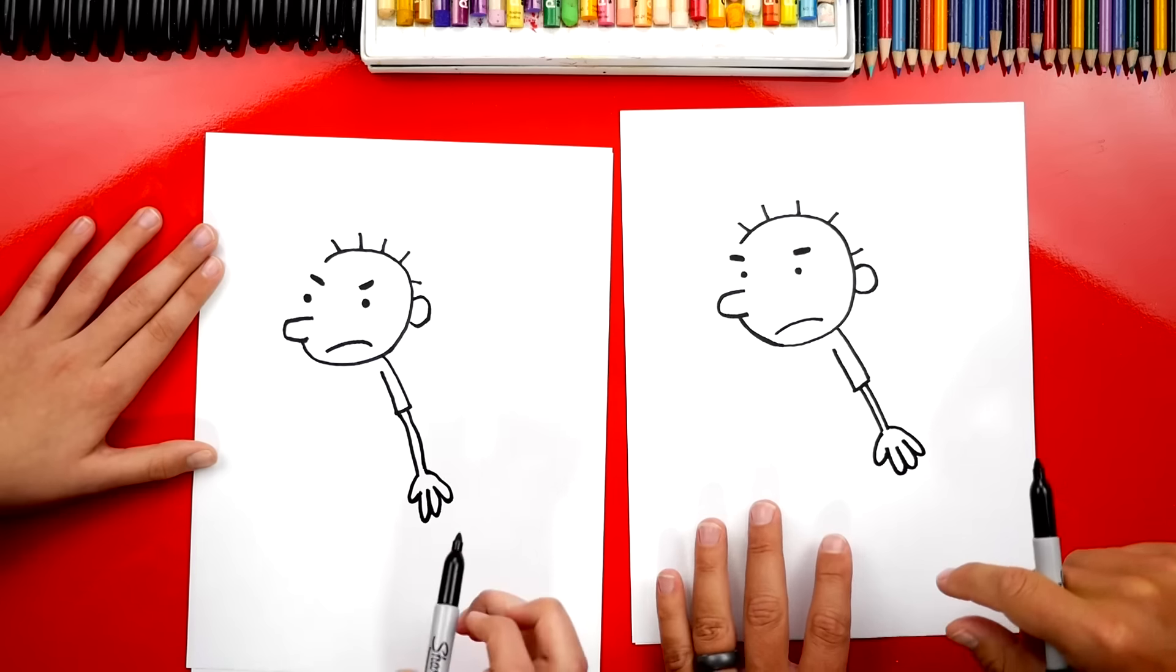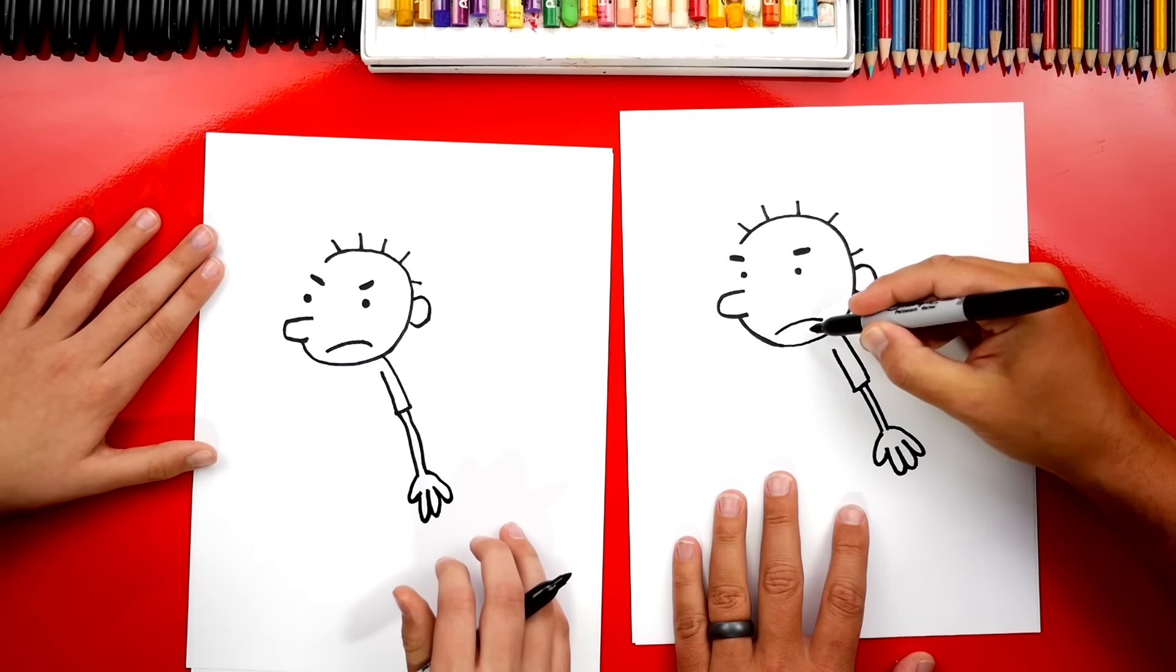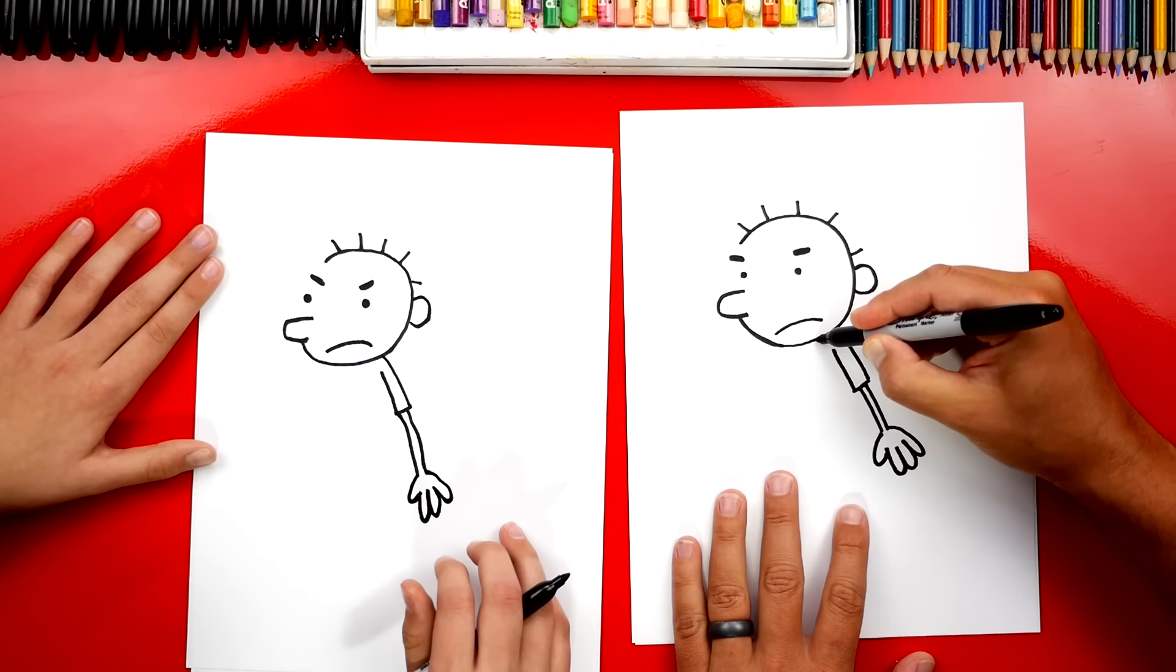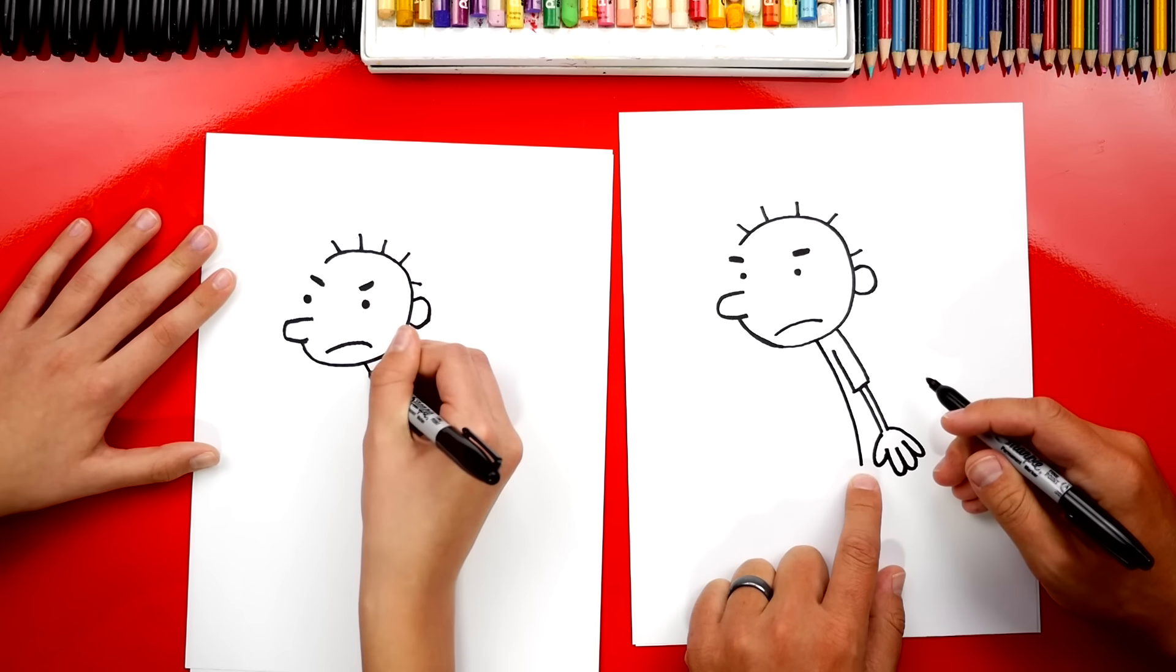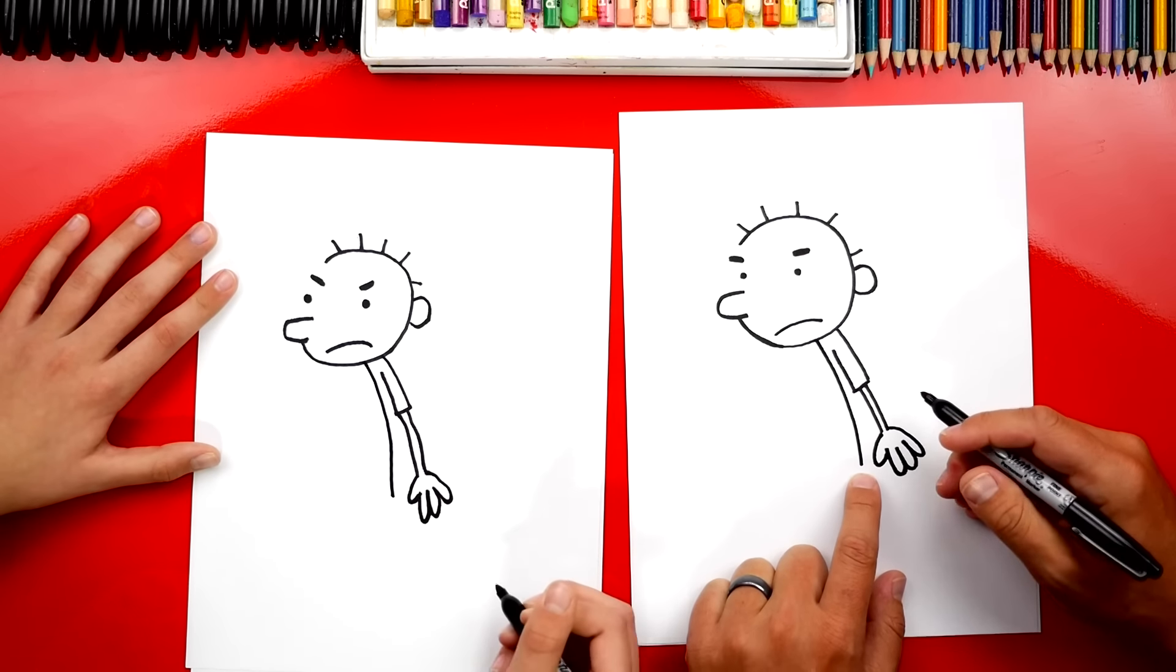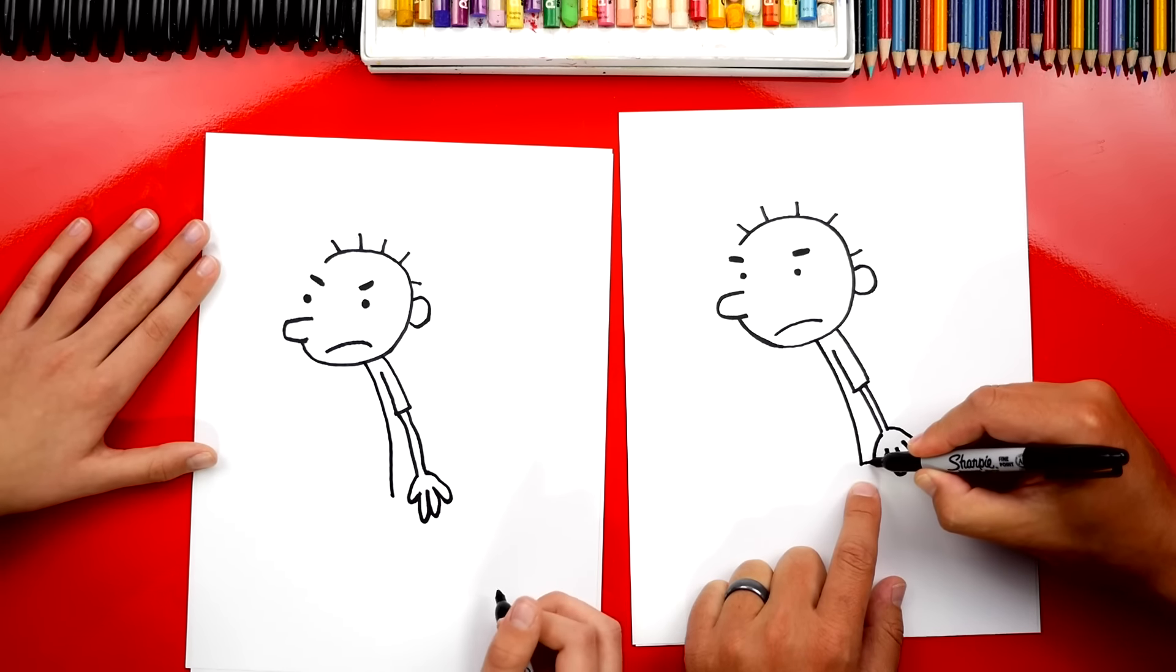All right, now we're ready to draw his body. We're going to draw his shirt first. We're going to draw the front of it. We're going to draw a line that comes down like this and curves right here down at the bottom. Yeah. And then we're going to connect it into his hand.